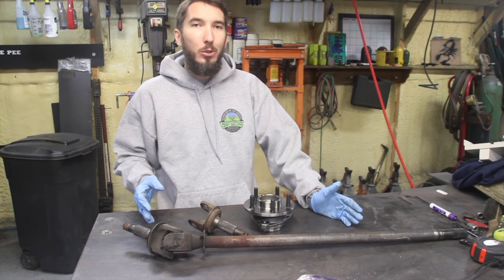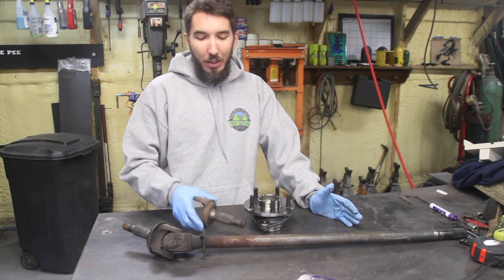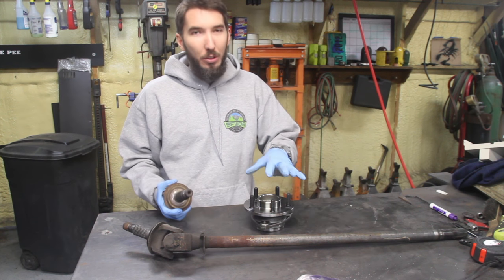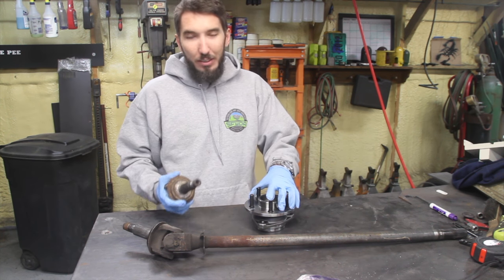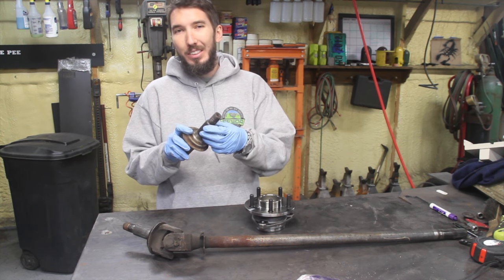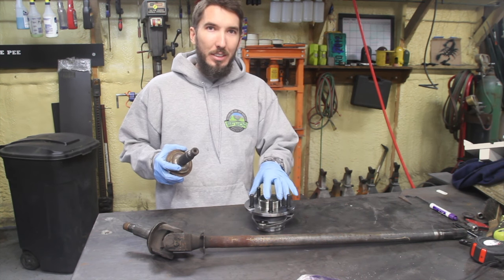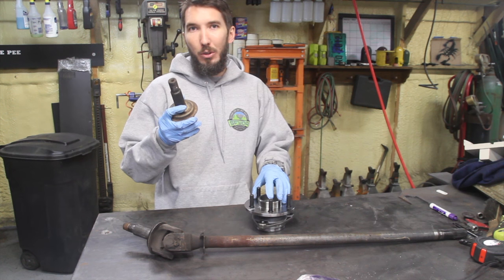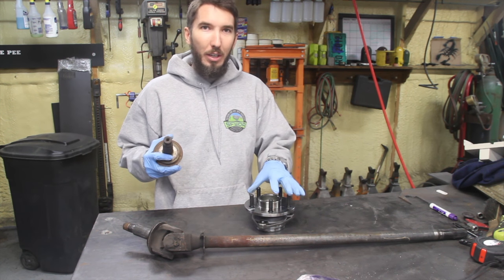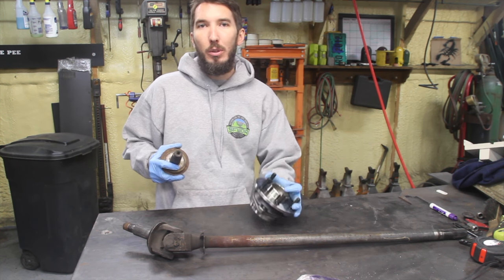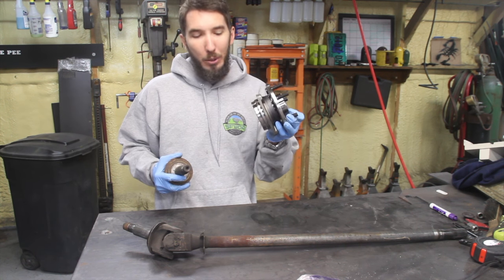So in conclusion, a bigger shaft is always better. It really has nothing to do with the unit bearing. It has everything to do with the size of the shaft. But you have to mate it on this side. So if you have a 30-spline on this side, you have to have a 30-spline on this side. And that's the only reason for the 30-spline unit bearing.